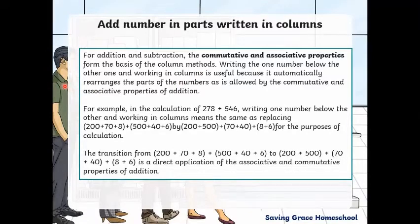For addition and subtraction, the commutative and associative properties form the basis of the column methods. Writing one number below the other in working columns is useful because it automatically rearranges the parts of the numbers as allowed by the commutative and associative properties of addition. For example, in the calculation of 278 plus 546, writing one number below the other in working columns means the same as replacing 200+70+8 and 500+40+6 by 200+500, plus 70+40, plus 8+6. You can see we're adding the hundreds, adding the tens, and then adding the units separately. This is the direct application of the associative and commutative properties of addition.